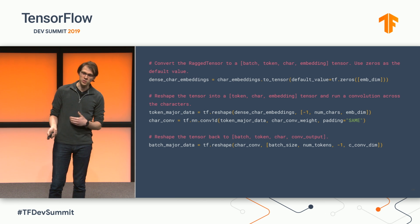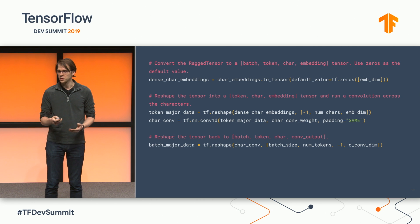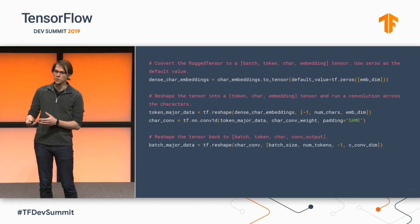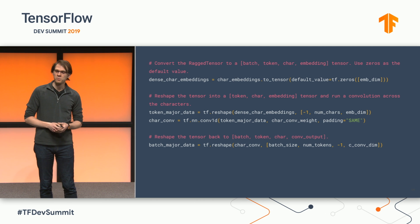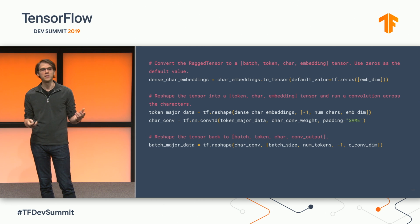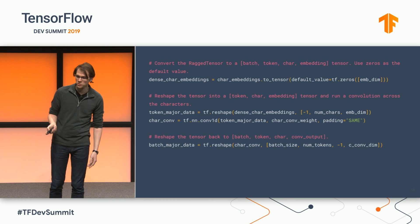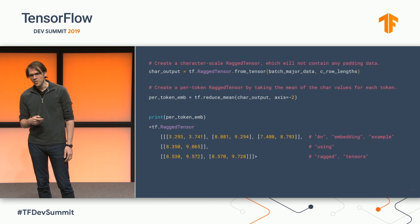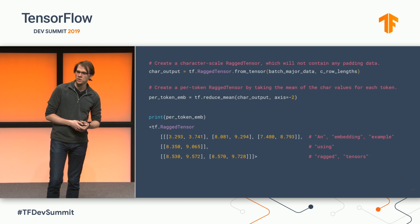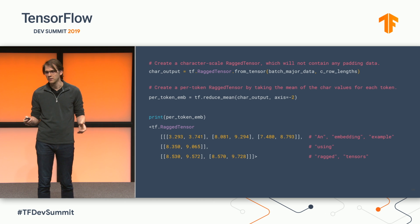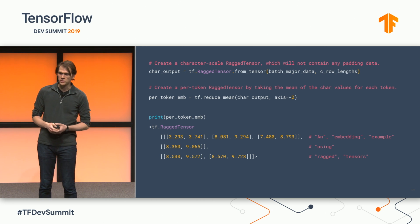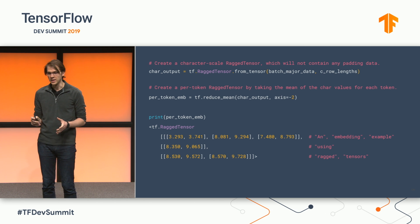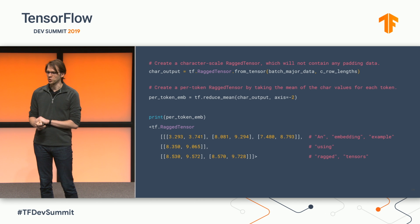We can convert it into a standard four-dimensional tensor, reshape it so that it is token-major, run a convolution over each character in each token, then reshape it back into a dense 4D tensor with batch, token, sentence, and embedding dimensions. That 4D dense tensor can be converted back into a 4D ragged tensor, which removes any padding. This ragged tensor can be reduced via reduce mean to create per-token embeddings. At the end, we have a tensor of embeddings, one for each token, built from characters, without any extraneous padding.